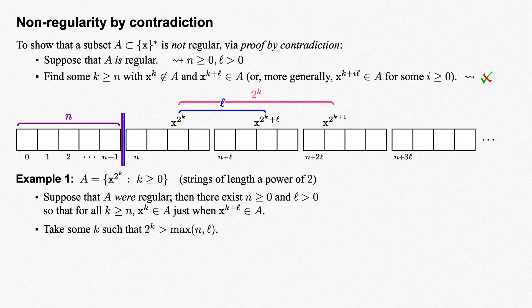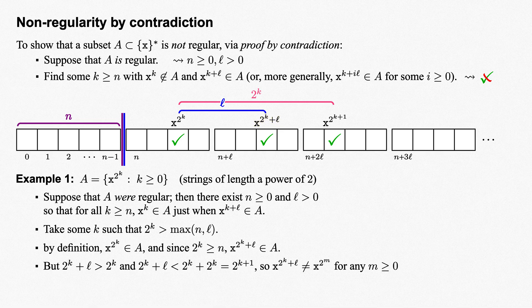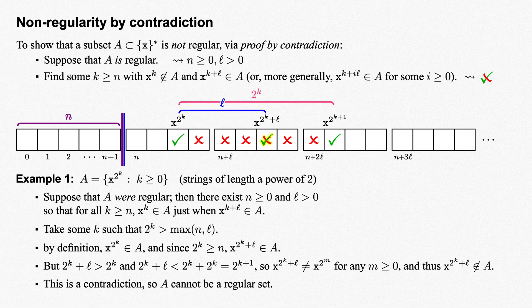To finish, let's check that we have a contradiction. By definition, x to the 2 to the k is in A. And since 2 to the k is greater than or equal to n, we know that x to the 2 to the k plus L is also in A by ultimate periodicity. But 2 to the k plus L is greater than 2 to the k, and 2 to the k plus L is less than 2 to the k plus 2 to the k, which is 2 to the k plus 1. So this power x to the 2 to the k plus L is not a power of 2, and thus by definition is not in A. Thus ultimate periodicity fails, so our set A must not be regular.